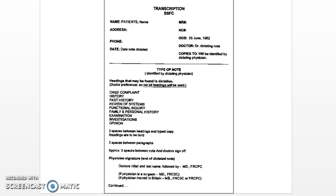Underneath you can see type of note, identified by the dictating physician. Headings that may be found in dictation are the doctor's preference, so not all headings will be used. As you can see: chief complaint, history, past history, reviews of systems, functional inquiries, family and personal history, examination, investigations, and opinions. Two spaces between headings and typed copy are required, and headings are to be bold. Two spaces between paragraphs, approximately five spaces between note and doctor's sign-off.